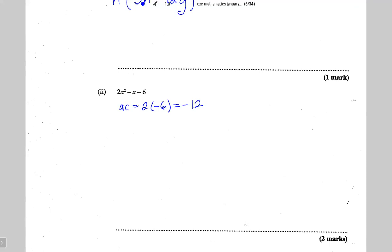To split the middle term I need to find two numbers: when I multiply the two numbers together I get negative 12, but when I add the same two numbers together I get b, which is minus 1. The two numbers are minus 4 and positive 3. So I'm going to use those two numbers to split the middle term.